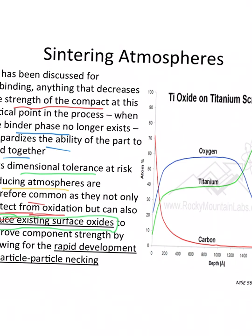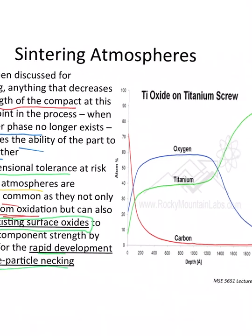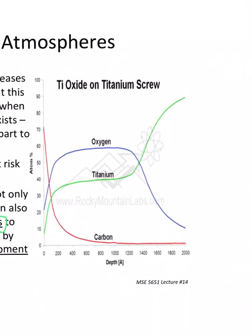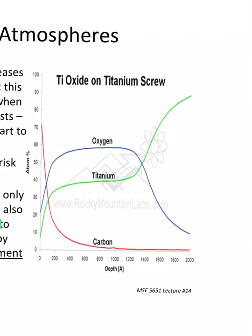This data is Auger analysis, which can measure oxygen content as a function of depth. This is shown for a titanium screw — a relatively boring but important biomechanical application used to hold pieces of bone together. It could be pure titanium or titanium aluminide. With Auger we are characterizing the surface composition, and depth here is measured in angstroms — a thousand angstroms is a hundred nanometers.